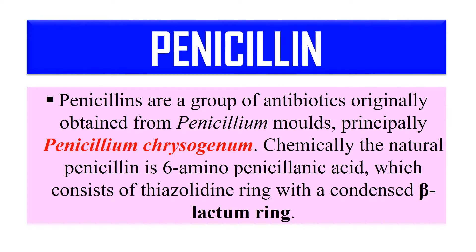The microbial product is Penicillin, which is an antibiotic. Penicillin is not a single compound; it's a group of related structural compounds. There are generally 6 types of Penicillin: Penicillin G, Penicillin V, Penicillin F, X, K, and O. The Penicillin originally obtained from Penicillium chrysogenum is a naturally occurring 6-Aminopenicillanic Acid, which consists of a Beta-Lactam ring.